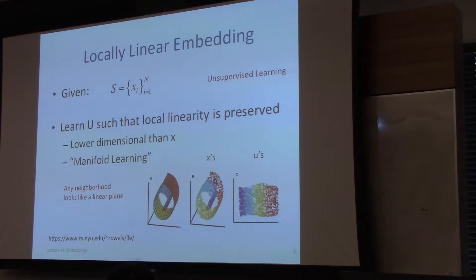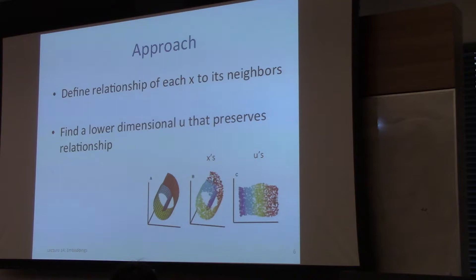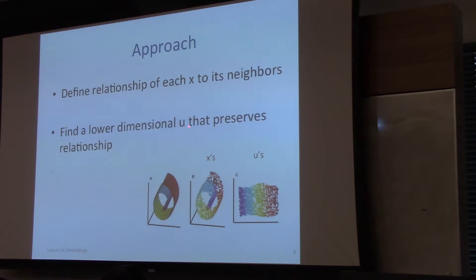The basic approach to local linear embedding: first, we must formulate what it means to satisfy the local linearity property. This boils down to defining the relationship from each data point in the training set to its neighbors. Within the neighborhood of each training example, how are the relative relationships of the data points arranged? Given such a relationship, we want to find a lower-dimensional representation of each X in U that preserves that relationship — similar to how in collaborative filtering we find a U that preserves rating scores, here we preserve local linearity.